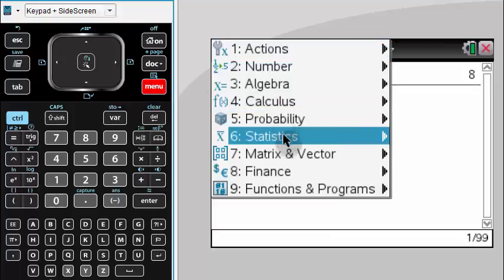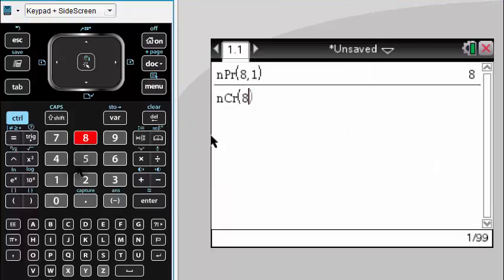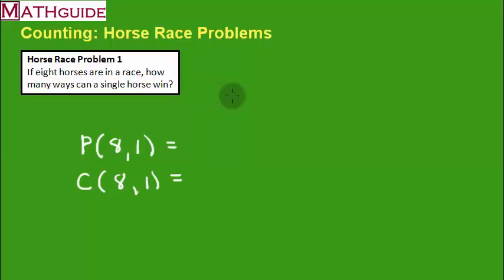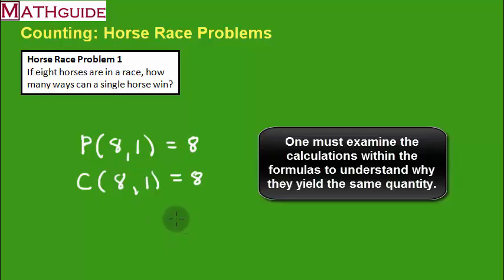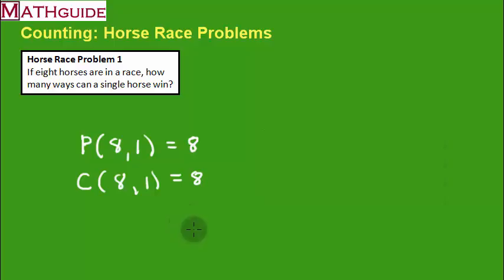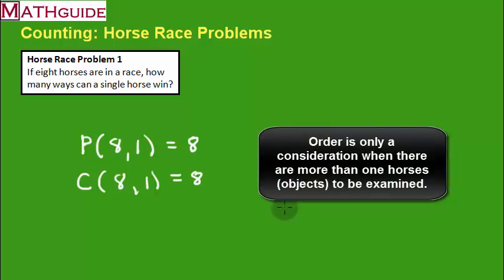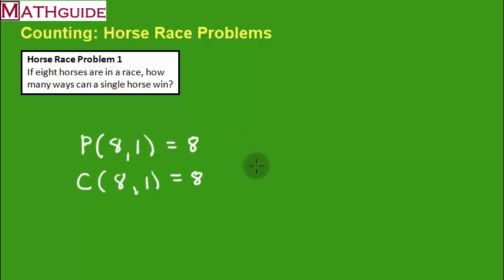Let's try it the other way: combinations, eight comma one — we also get eight. To understand why they come out the same: if there's only one horse, there is no order to consider. There's only one way a horse can finish when you're only selecting one object. Intuitively, there are eight horses and eight ways a horse could win, so eight different horses and eight ways they could finish. Both formulas give the same answer here.